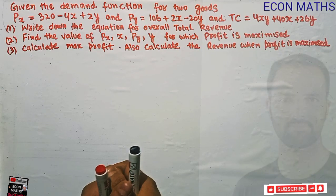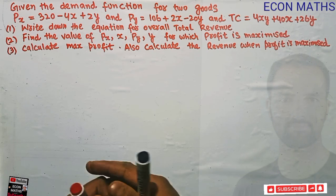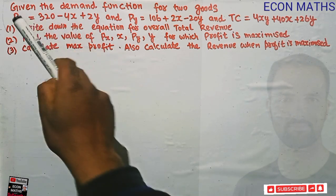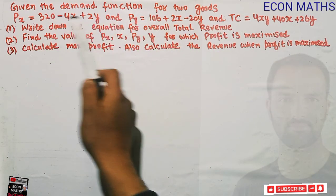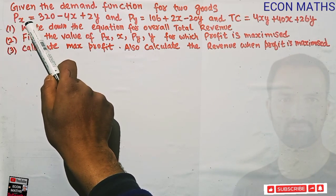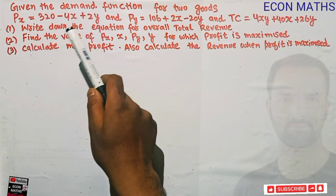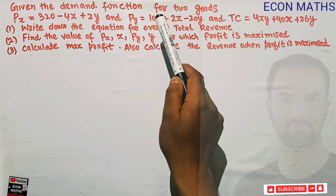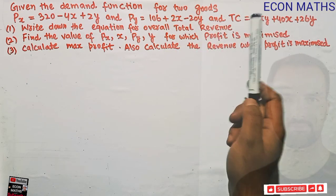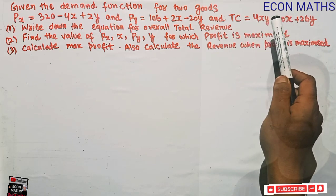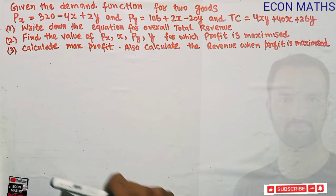Hi, this is Halal. In this video on the mathematical economics series, we will solve a problem asked by a brother Arun Divedi on YouTube. The question gives us demand functions for two goods: P_X = 320 - 4X + 2Y, P_Y = 106 + 2X - 20Y, and the total cost is TC = 4XY + 40X + 26Y.